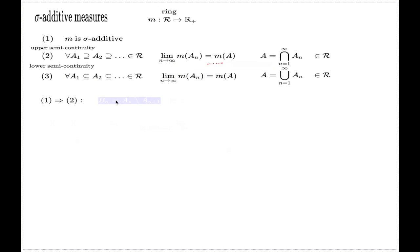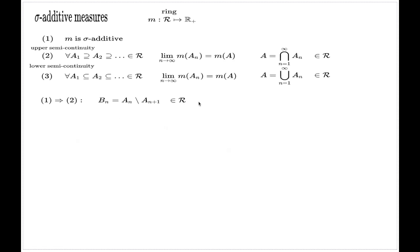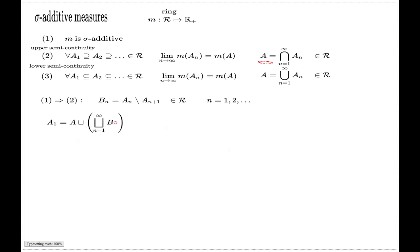I'll do this by introducing new sets B_n, which will be the set difference A_n minus A_{n+1}. Because the ring is closed under set difference, these are elements of my ring for every N from one onwards. What I claim is that the set A_1 is the disjoint union of the set A and all of these B_n's.